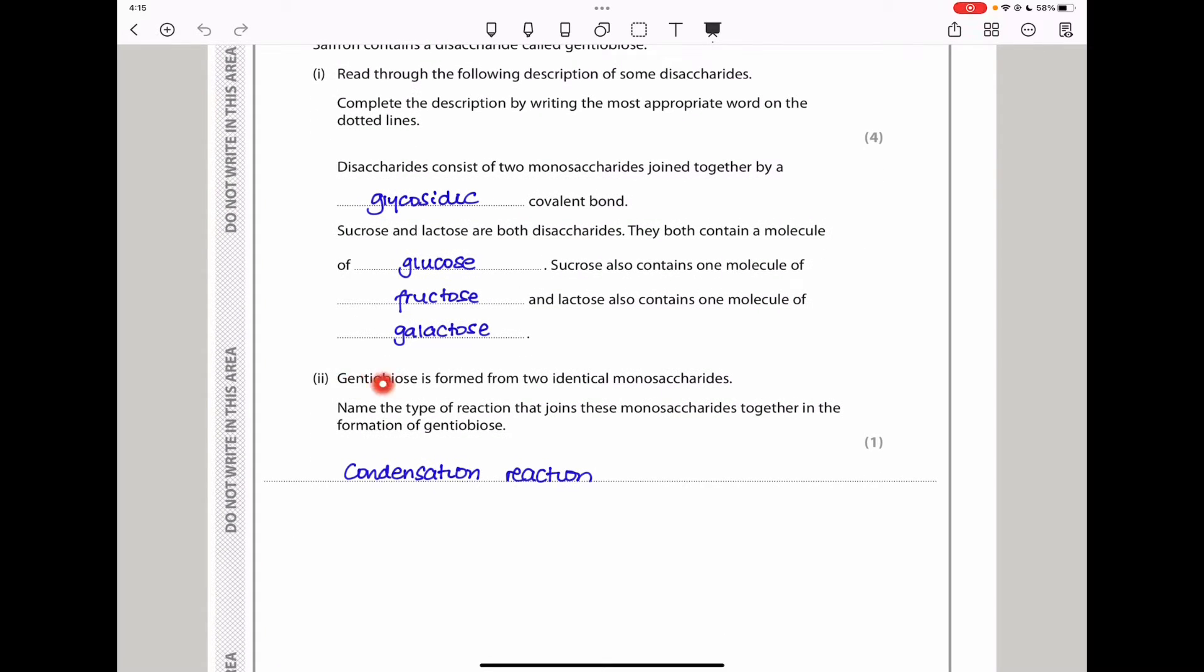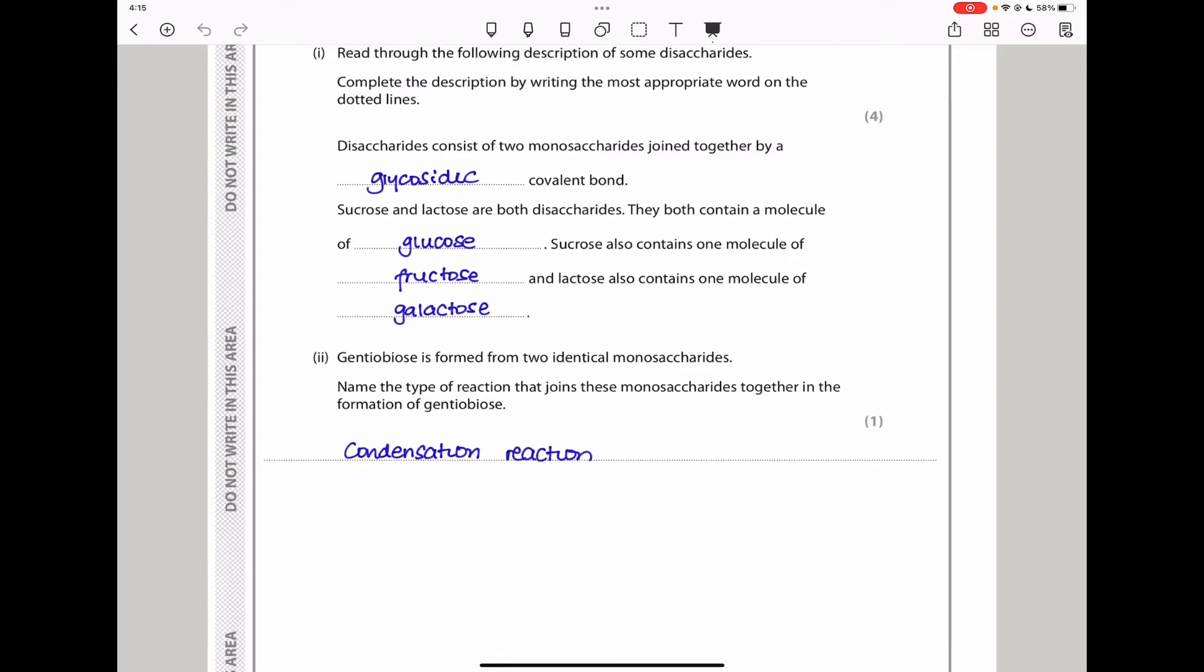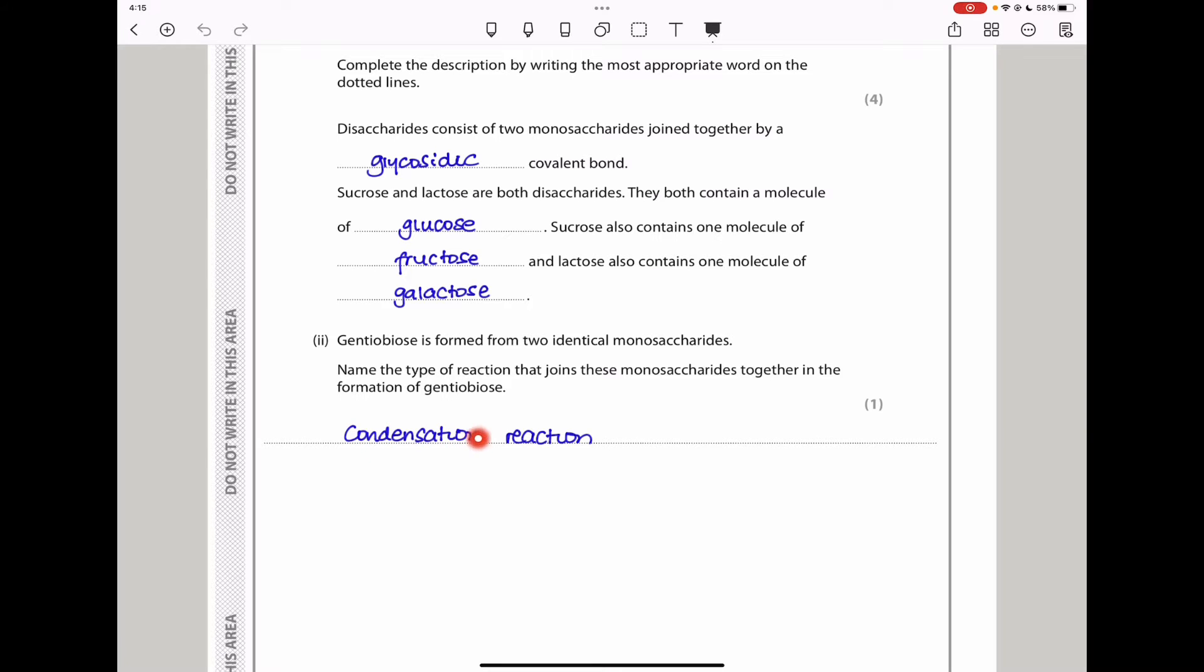Gentiobios is formed from two identical monosaccharides. Name a type of reaction that joins these monosaccharides together in the formation of gentiobios. This is a condensation reaction which involves a loss of a water molecule when two monosaccharides come together to form a disaccharide.